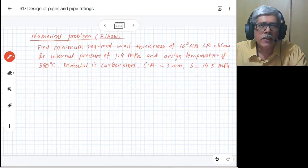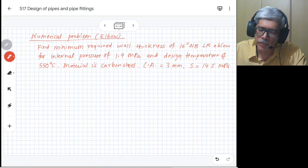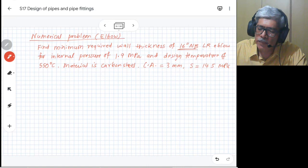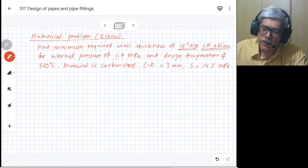We will illustrate the formula by using the problem which is given here. In this problem, we have to calculate the minimum required wall thickness of a 16-inch nominal bore long radius elbow.